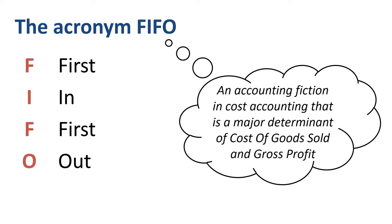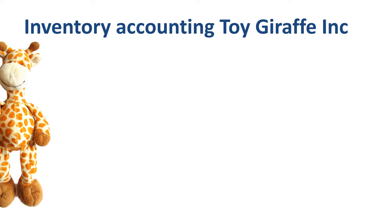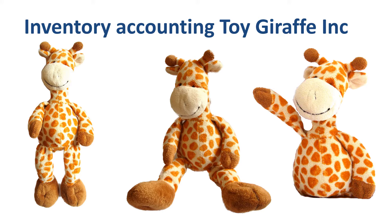Let's work through an example of FIFO. We will do the inventory accounting for a hypothetical company called Toy Giraffe Inc. As the name suggests, this is a company buying and selling toy giraffes.